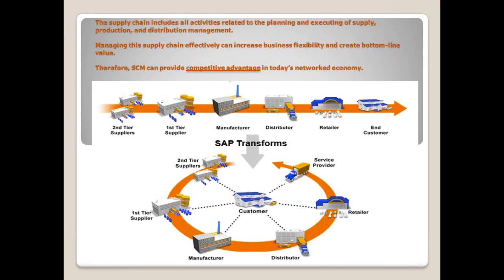Now if you take global-level companies — MNCs or bigger companies — they have a lot of plants, a lot of distributors, and a lot of retailers, and they may have a lot of products. To integrate all these things, they need effective software. SCM softwares are available in the market, and SAP APO is the market leader, occupying 70% of the business. Others include Oracle, i2, and Ramkey Info.